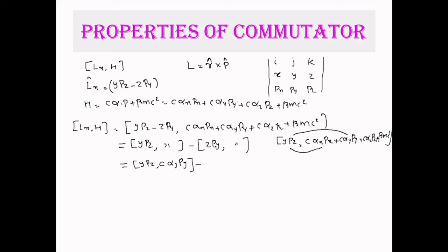For the second part [zpy, H]: considering [zpy, c·αx·px], z commutes with αx and px, and py commutes with αx and px, so all terms are zero. For [zpy, c·αy·py], z commutes with αy, py commutes with py, so all those terms commute and are zero. For [zpy, c·αz·pz], there is one chance because the commutator [z, pz] = iℏ is non-zero. So the only surviving term from the second part is [zpy, c·αz·pz]. All other terms are zero.